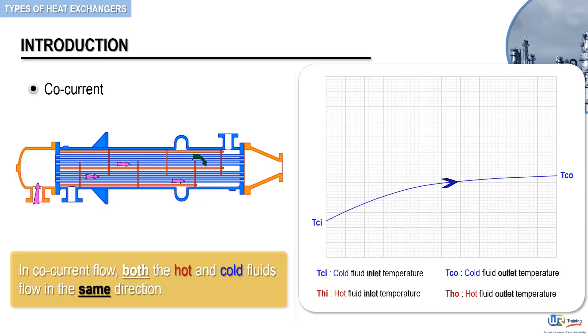And the temperature of the hot fluid entering the exchanger decreases from Thi to Tho as the hot fluid flows through the tubes.